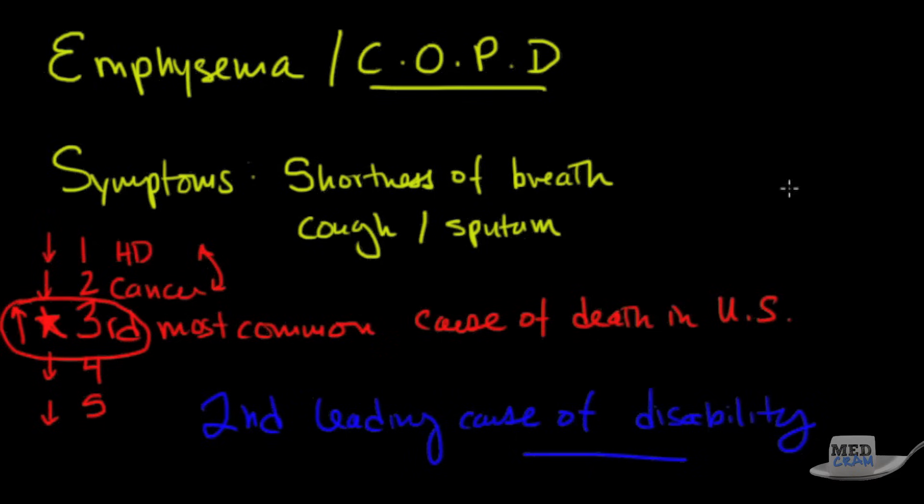In addition to all of this, it's also the second leading cause of disability. So the bottom line here is that this is a very important disease to know about. And in case you're wondering how much this costs the US healthcare system every year, the answer is about 50 billion dollars.